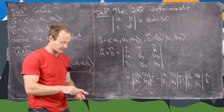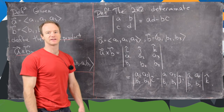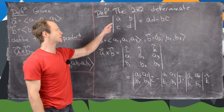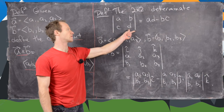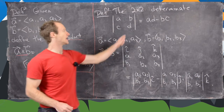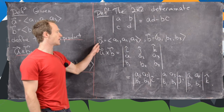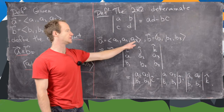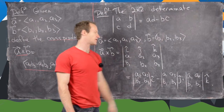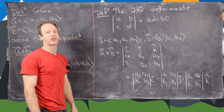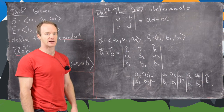Now here's an easier way to calculate the cross product. First we define the 2×2 determinant: for a 2×2 matrix with entries A, B, C, D, the determinant is AD minus BC. Then, given vector A = (a1, a2, a3) and B = (b1, b2, b3), the cross product a cross b can be expressed as a 3×3 determinant that expands in terms of 2×2 determinants.